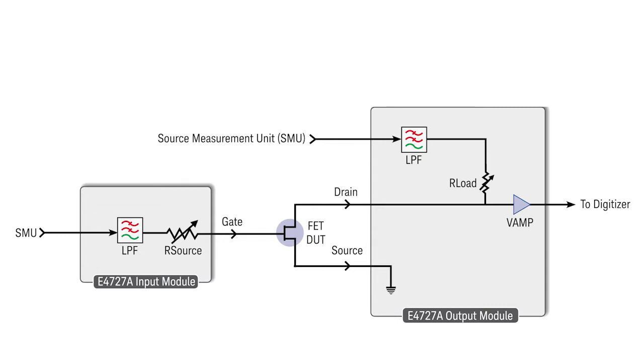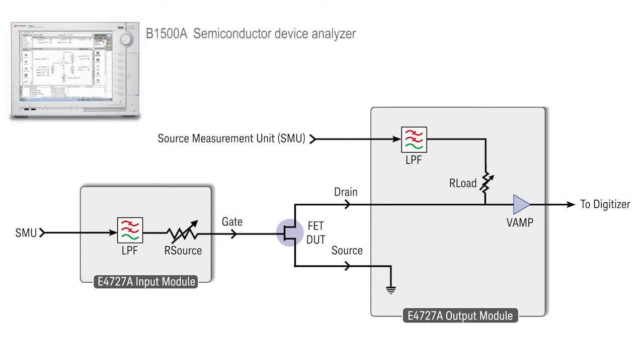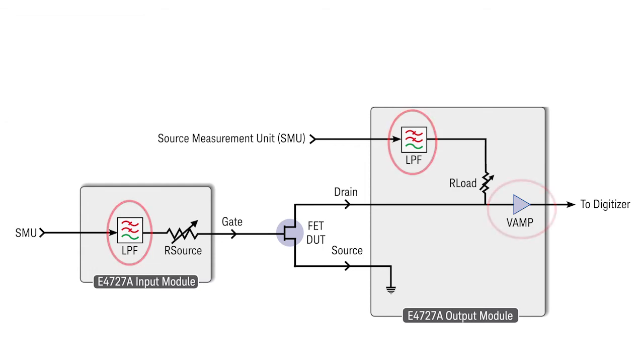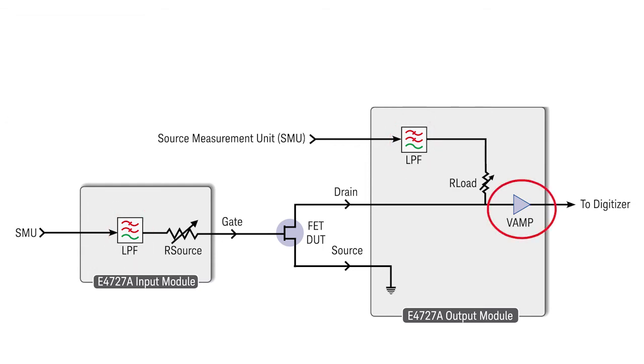To measure noise in a CMOS device, the source measurement unit, like the Keysight B500A, is used to apply bias and measure DC operating points. When measuring noise, the source measurement unit noise contribution must be filtered out. The voltage noise is amplified and analyzed using a high-speed digitizer.